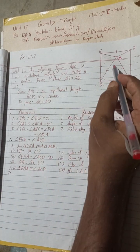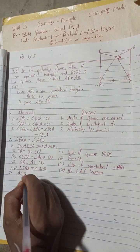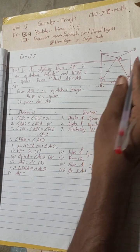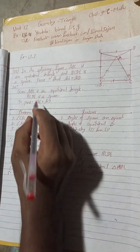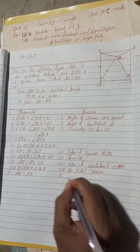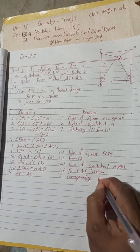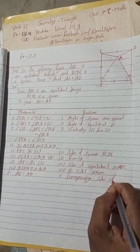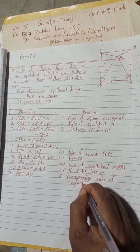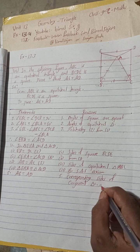Number five: Therefore, AE is equal to AD. Reason: corresponding sides of congruent triangles are equal. This completes the proof.